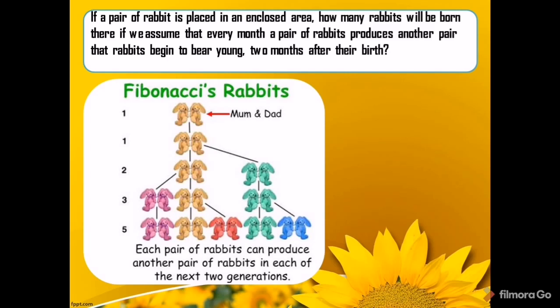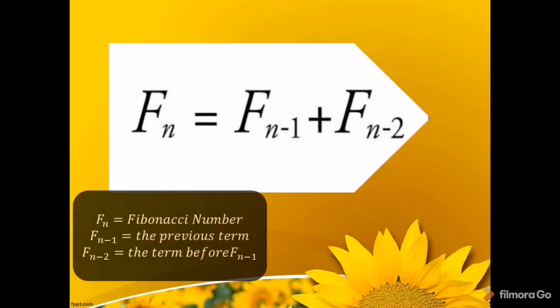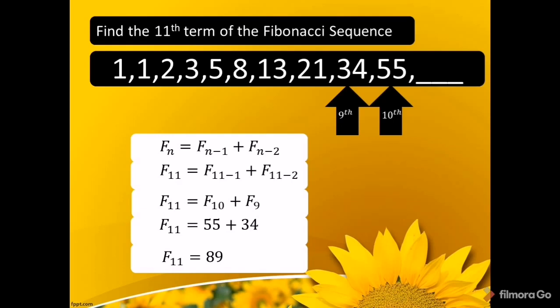Fibonacci also discovered the Hindu-Arabic system of writing numbers, which is a replacement for the Roman numeral system. To get the nth Fibonacci number, we use the formula: F(n) = F(n−1) + F(n−2), where F(n) is the Fibonacci number, F(n−1) is the previous term, and F(n−2) is the term before F(n−1).